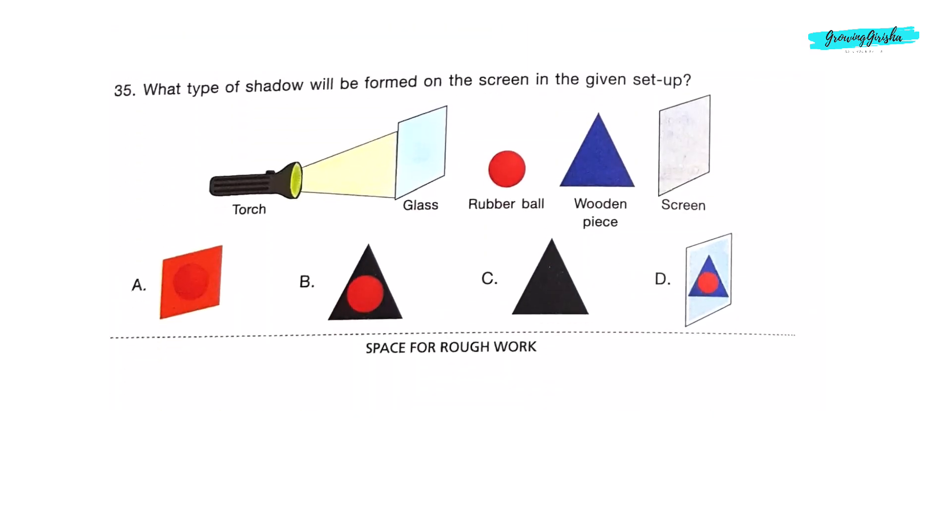Question 35: What type of shadow will be formed on the screen in the given setup? Torch is a source of light and glass is a transparent material. Rubber ball is opaque and it is smaller than the wooden piece. Hence only shadow of wooden piece will be obtained on the screen. So option C is the correct answer.